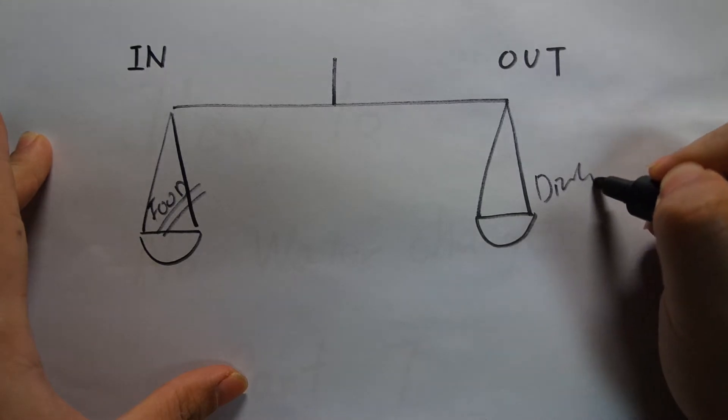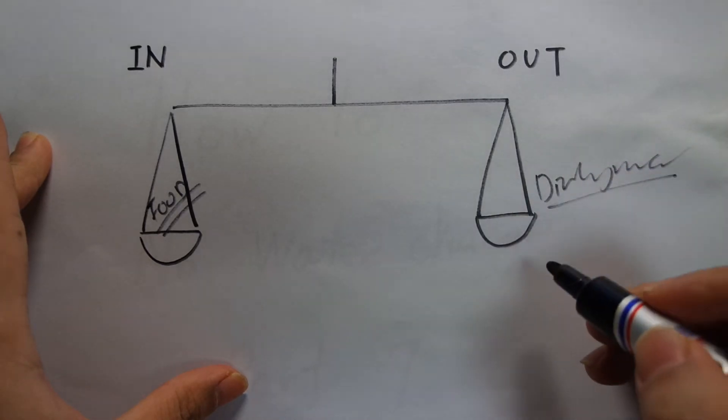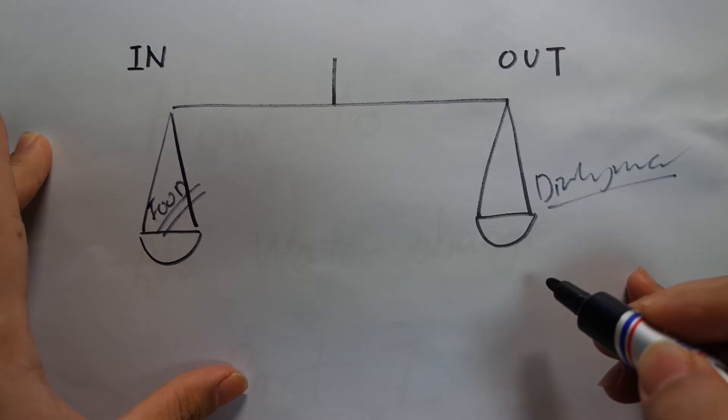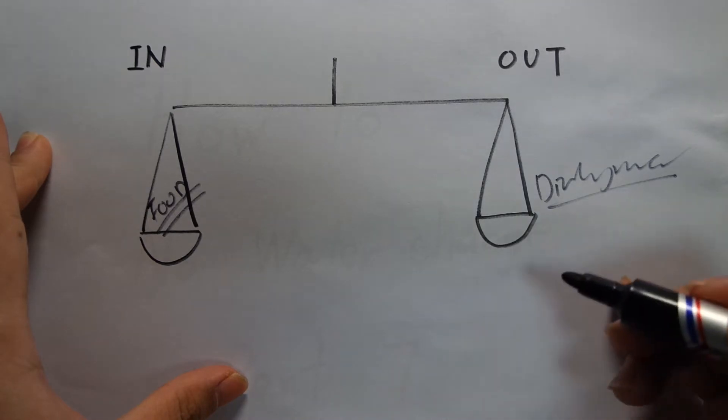So out goes the dirty water. And what I've been discussing is producing alternate ways of producing output like using plants or denitrification.